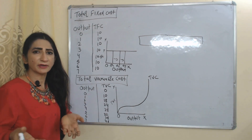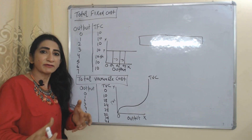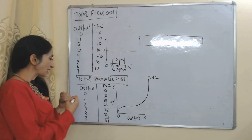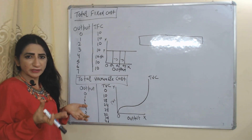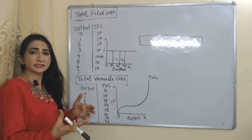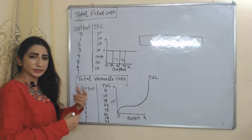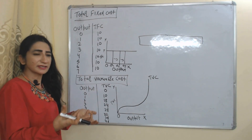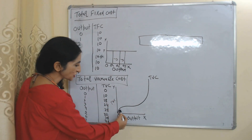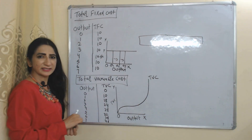After a certain time period, variable cost starts increasing at an increasing rate. Initially, total variable cost increases at a decreasing rate because we are getting increasing returns to the variable factor — our labor is giving more output. But after a certain time period, over-utilization starts, so we are not receiving as much output from our labor, and we eventually receive diminishing returns to the variable factor. That is why after a certain time period, total variable cost increases at an increasing rate. In the diagram, initially total variable cost increases at a decreasing rate, but after a certain time period it starts increasing at an increasing rate.